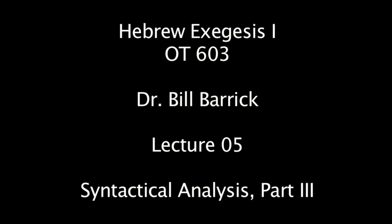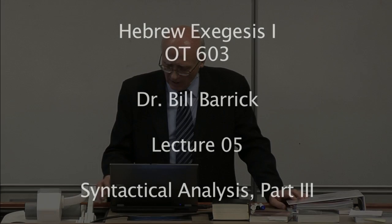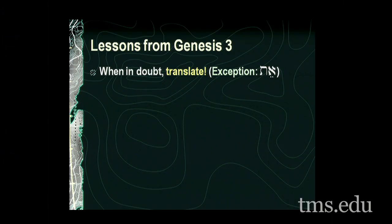As we start today I want to spend a little bit of time talking about your translation of Genesis chapter 3. You have the first two sections graded and returned to you with comments on them. I want to talk about the lessons we learn from translating Genesis 3. The first lesson is: when in doubt, translate. For example, the direct object marker 'et' is not translated, but most other things you need to be certain that you translate.